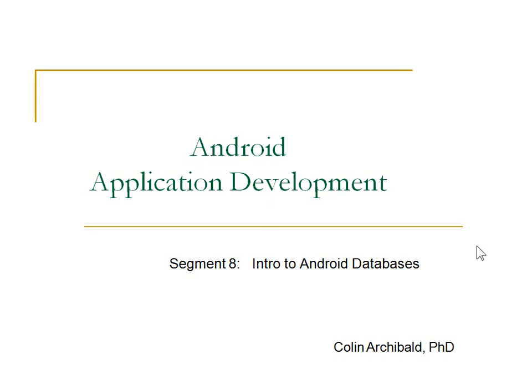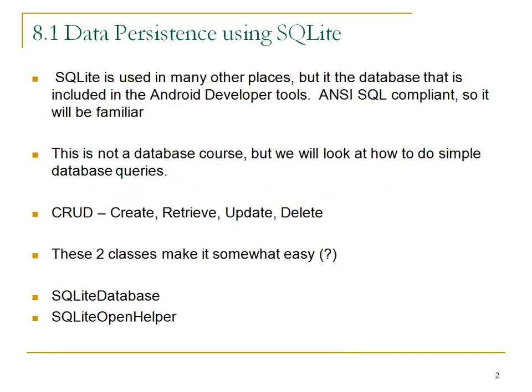Hello and welcome back. In the last segment we added some dialogues to the Bowling Scores application, adding to the usability, but we didn't yet persist the data. When you run the application and type in your scores, it doesn't make sense that those aren't there when you go back, because the whole point is to keep the history of the Bowling Scores. So in this segment we're going to introduce talking to databases from Android.